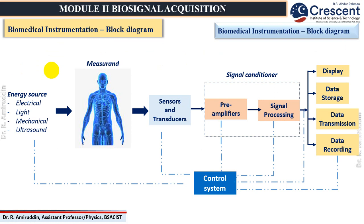Before we enter into the core content of the lecture, we need to understand the block diagram of biomedical instrumentation. We have a measurand — that is the human body — and we have the energy source, which may be either electrical energy, light energy, mechanical energy, or ultrasonic energy. We have sensors and transducers which are used to detect the electrical signals being generated from the human body. In biological aspects, as mentioned in the previous class, we call the sensors and transducers as biopotential electrodes.